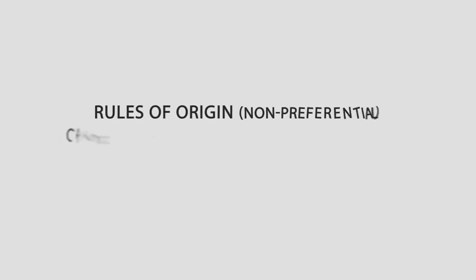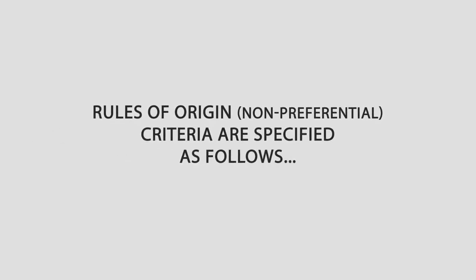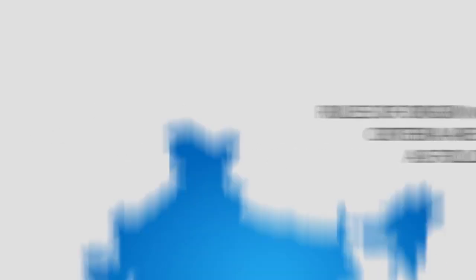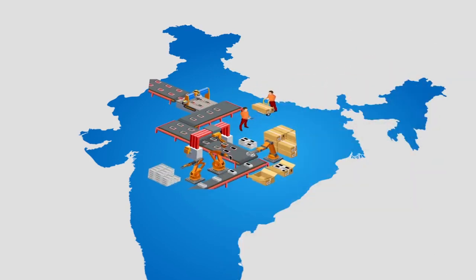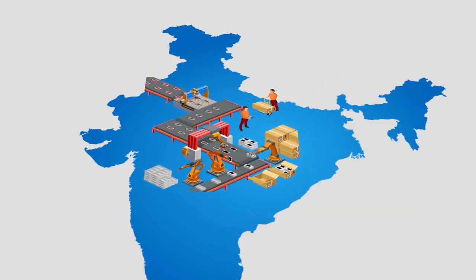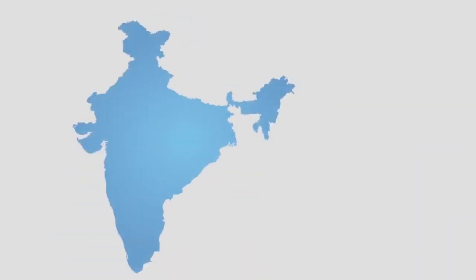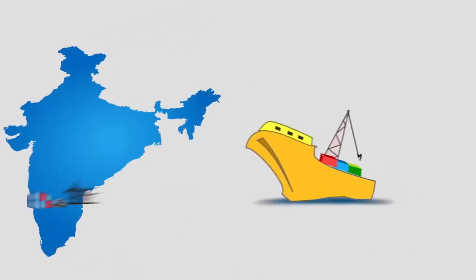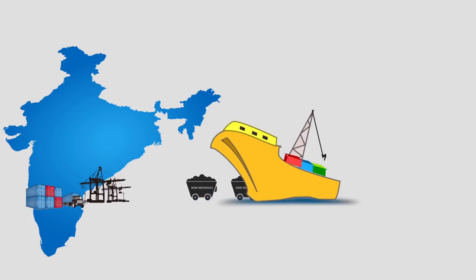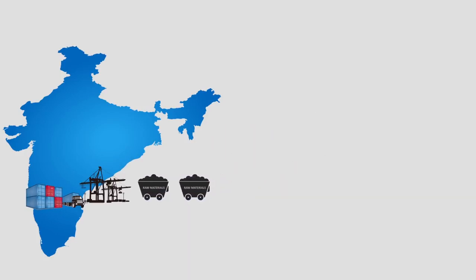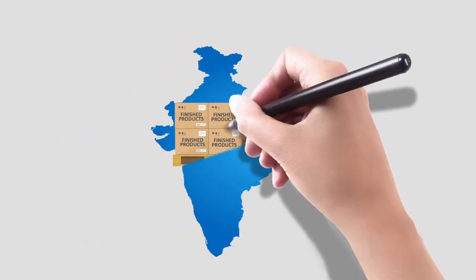What are rules of origin non-preferential? Non-preferential rules of origin criteria are specified as follows: goods should be manufactured in India as per the definition of manufacture in para 9.31 of FTP. If imported inputs have been used for the production of export product, the export product can be considered to be originating in India, non-preferential, only if the imported inputs undergo substantial processing.